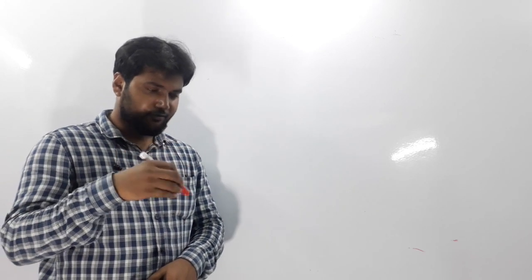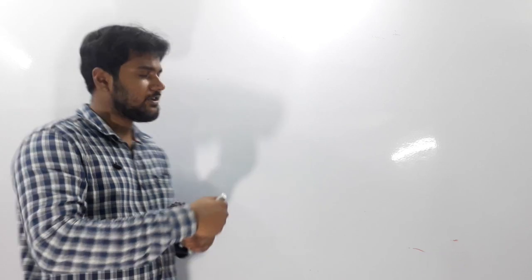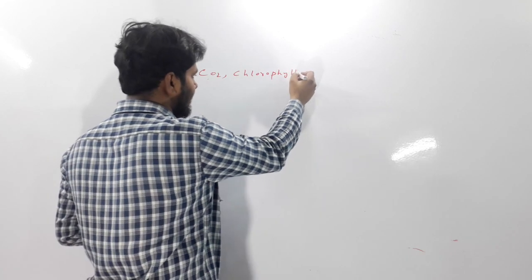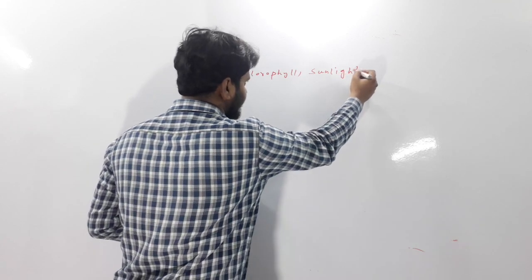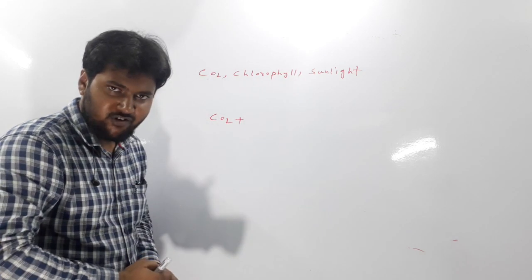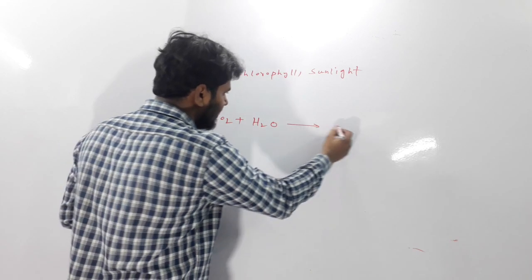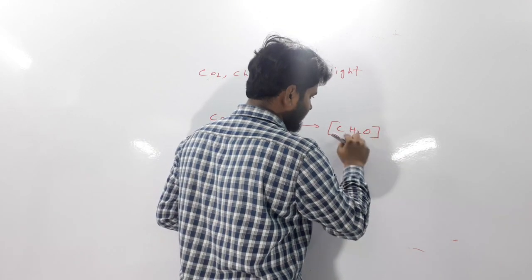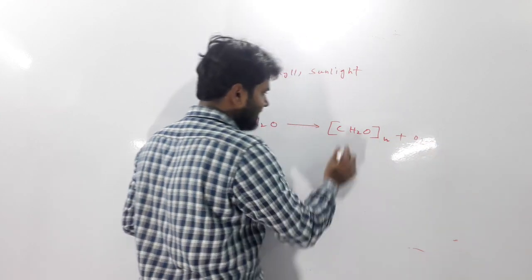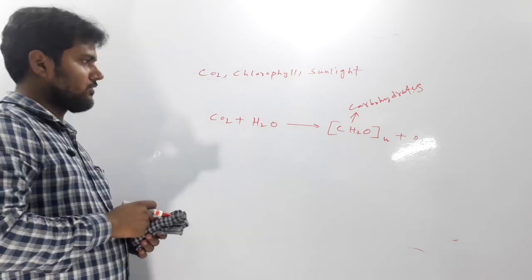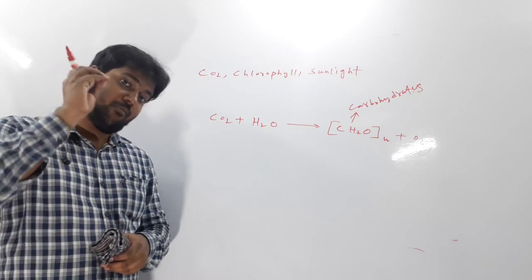Now we need to clarify one important concept: when we list the essential raw materials for photosynthesis, we write CO2, chlorophyll, and sunlight — we are not writing H2O. But in the photosynthesis equation, we write CO2 + H2O → CH2O + O2, where CH2O represents carbohydrates. So is water a must for photosynthesis?